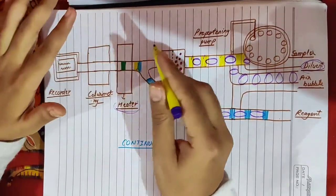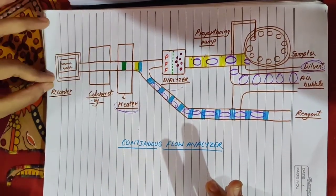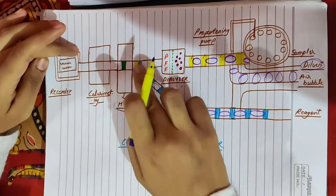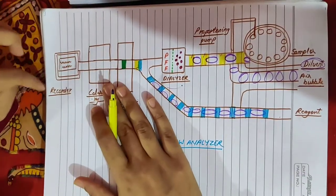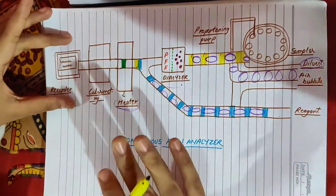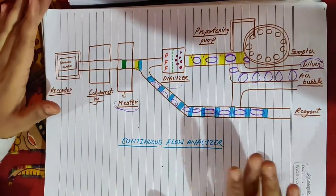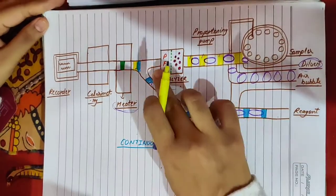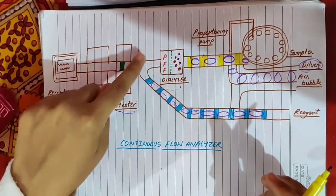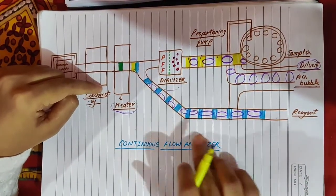Now the requirement is fulfilled — we have a colored compound. Next, there will be a color detector: the colorimetry instrumentation. The colorimetry instrumentation measures the concentration of the colored compound. Here is the recorder which can be seen on a computer screen, where you can see the concentration of whatever you tested and what amount is present. This is the continuous flow analyzer. Why is it called continuous flow analyzer? Because it has continuous flow — samples are continuously separated by air bubbles, and reagents are also separated by air bubbles.